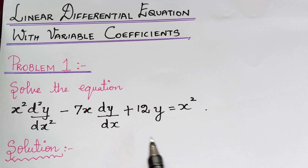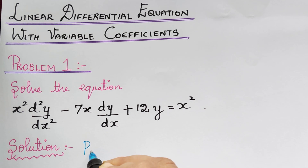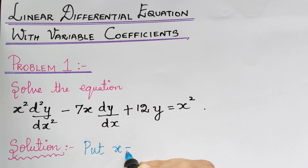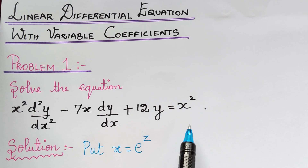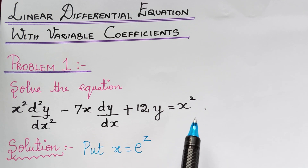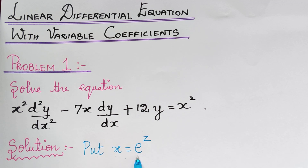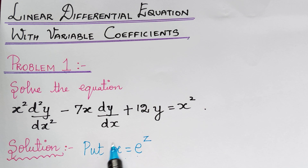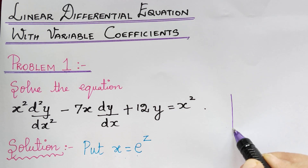The method of solving such an equation is as follows. The first step is we have to make a substitution: we put x equal to e to the power z, so that we can convert this equation into a linear differential equation with constant coefficients. Let us see how we are going to do that. We are making a substitution of x equal to e^z, and from this, if we take logarithm on both sides, I will show that here.